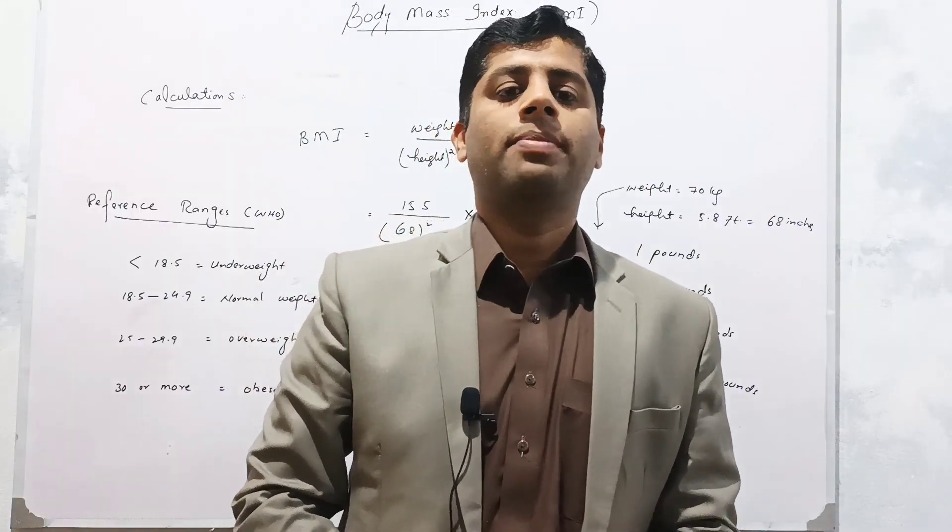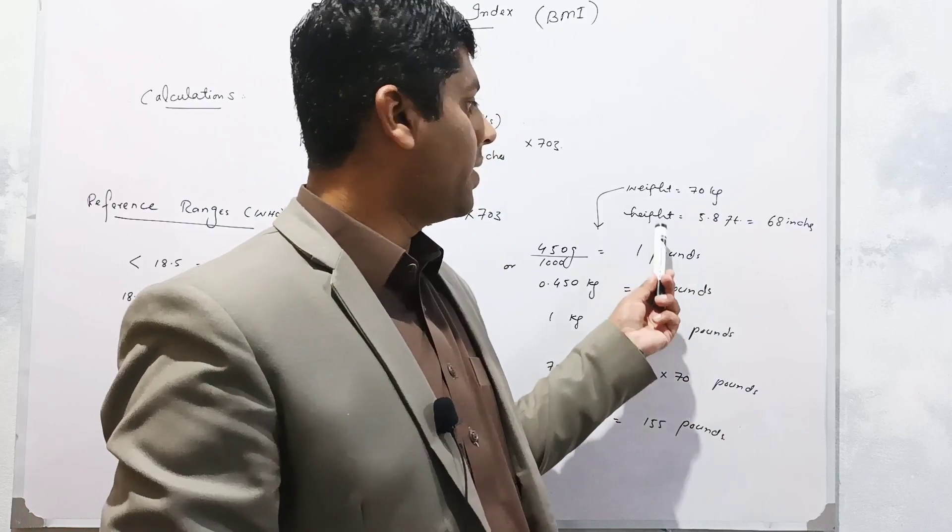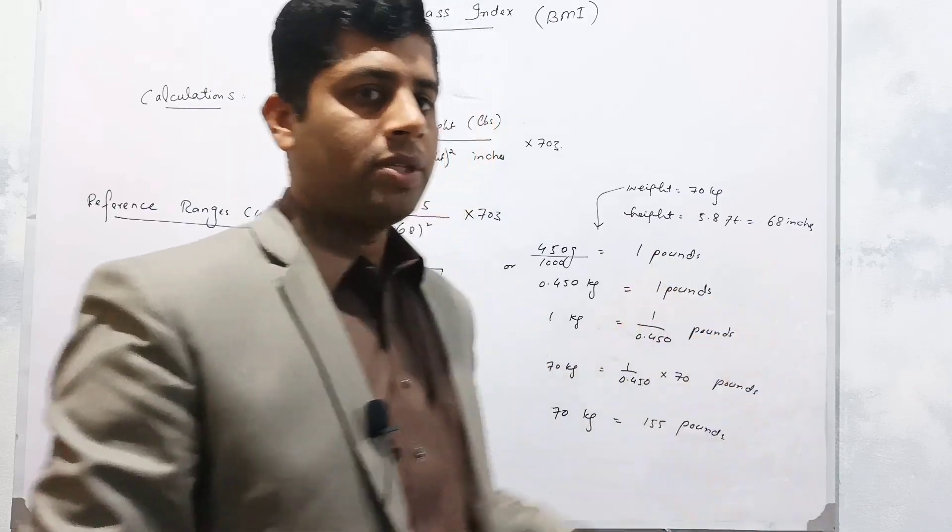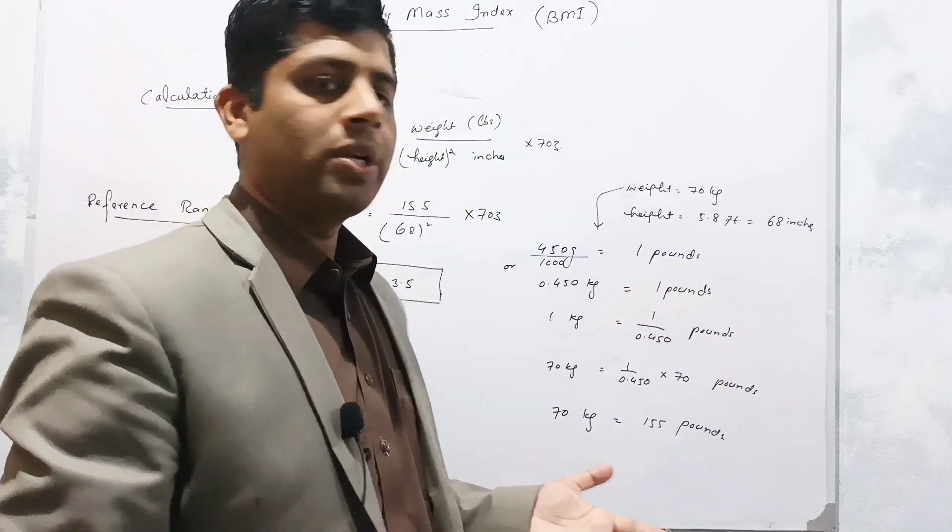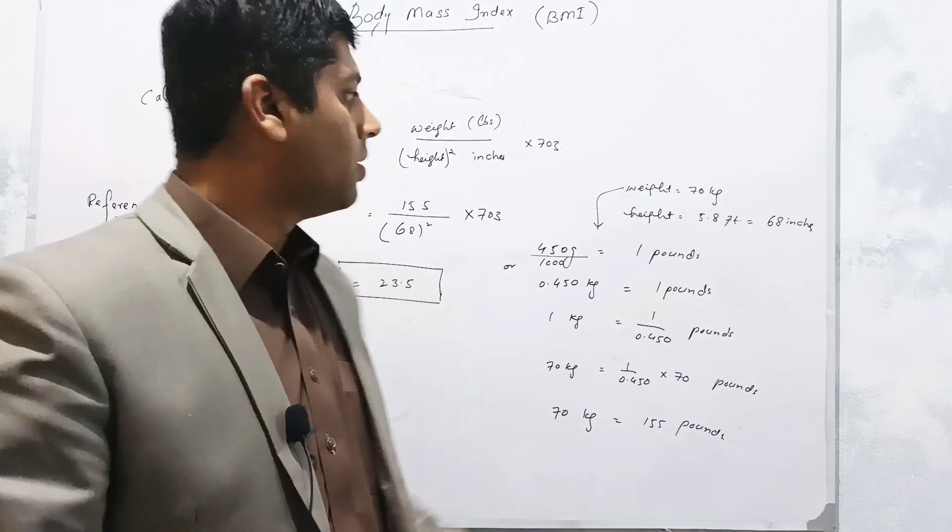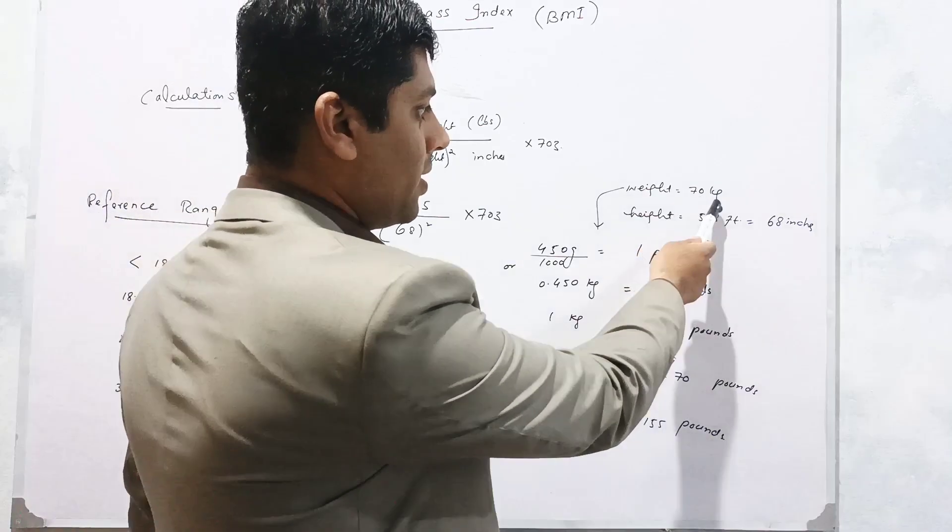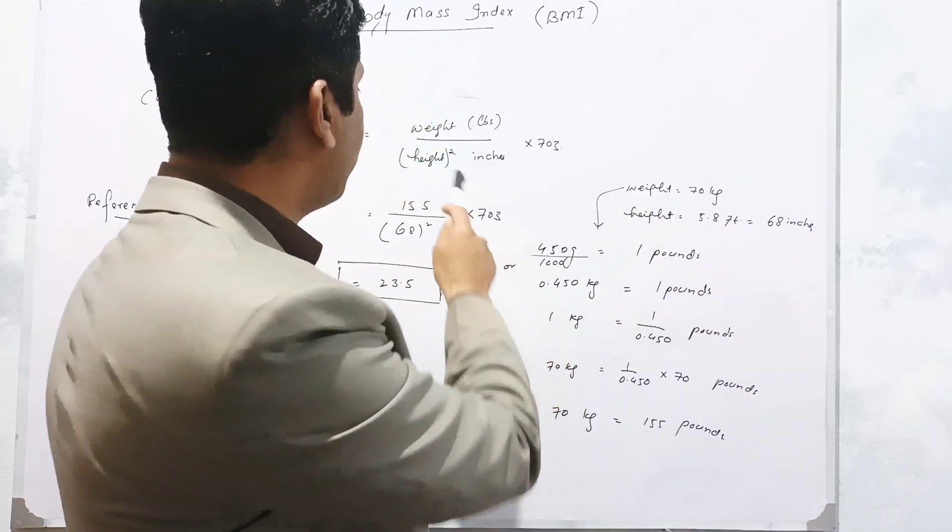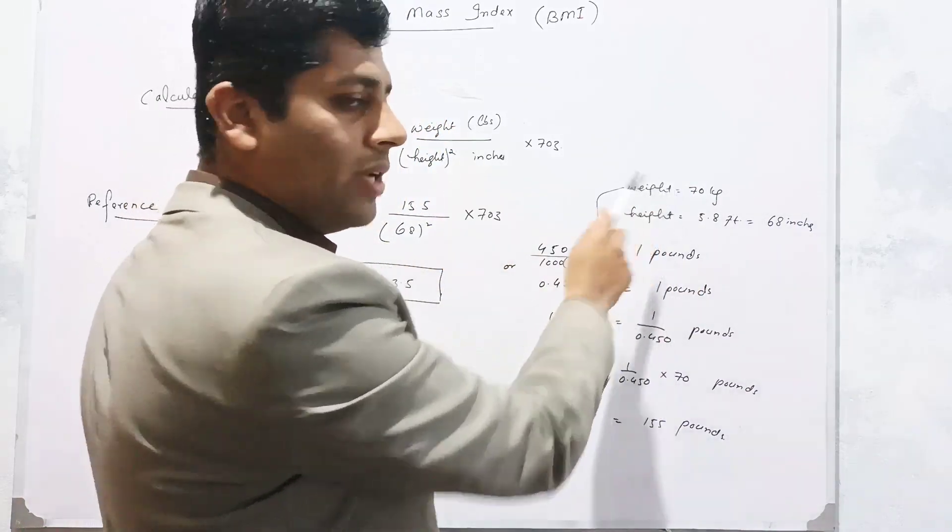Dear viewers, I am calculating my BMI. My weight is 70 kg and height is 5.8 feet. It's very easy to calculate your BMI if you have known height and weight. My weight is 70 kg - I have to convert this kg into pounds as required in the formula.